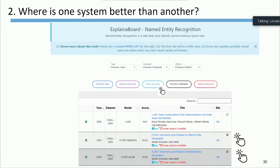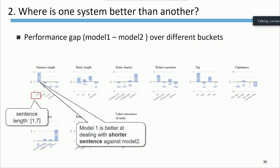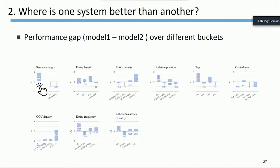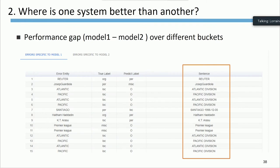The second thing ExplainBoard can do is help identify where one system outperforms another. You can select two systems and click the pairwise analysis button, and ExplainBoard generates a performance gap histogram where each bucket represents the performance of model one minus model two. For example, from the first histogram, we can see model one is better at dealing with short sentences compared to model two. You can further click the bucket, and ExplainBoard generates two error lists — one with errors specific to model one and another with errors specific to model two.